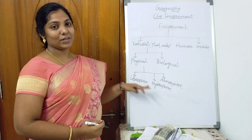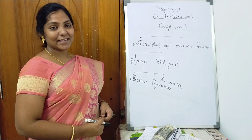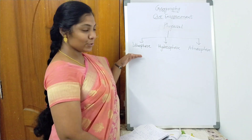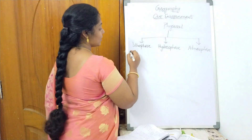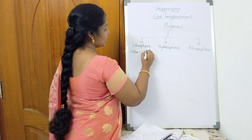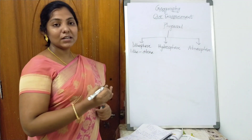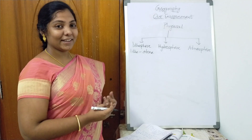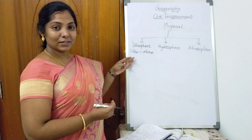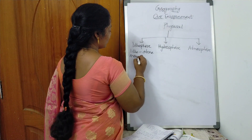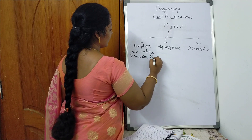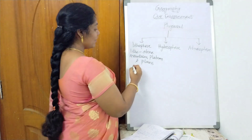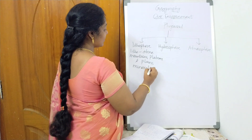I think you all remember what is lithosphere, what is hydrosphere, and what is atmosphere. You have studied in your previous class, that is in class 6. The physical environment has three components: lithosphere, hydrosphere, and atmosphere. Lithos is a word derived from Greek which means stone. So the lithosphere is the outer hard surface of the earth. The three landforms that come under lithosphere are mountains, plateaus, and plains. We also get some minerals and some valuable things from lithosphere.